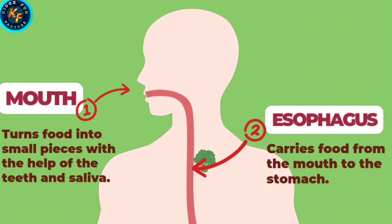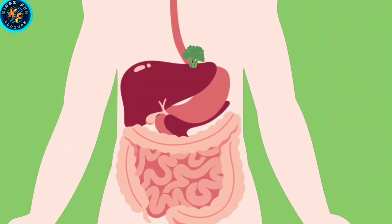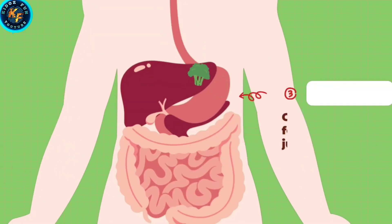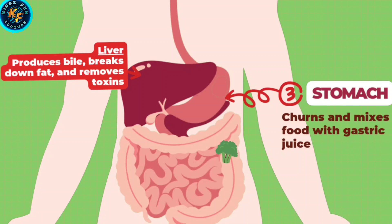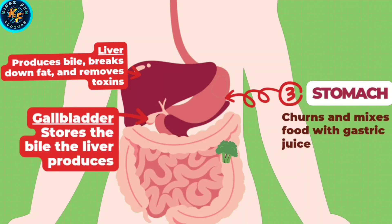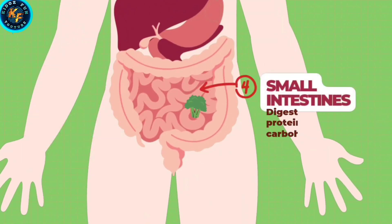The esophagus carries food from the mouth to the stomach. The stomach churns and mixes food with gastric juice. The liver produces bile, breaks down fat, and removes toxins. The gallbladder stores the bile the liver produces.